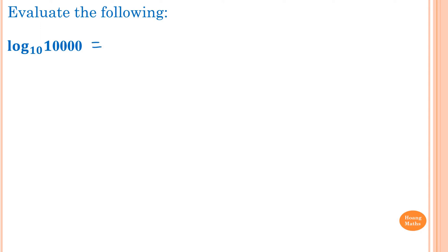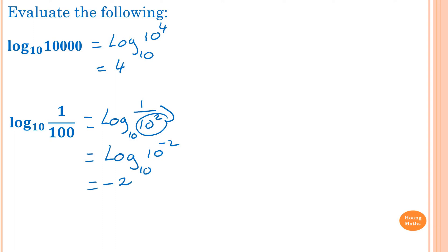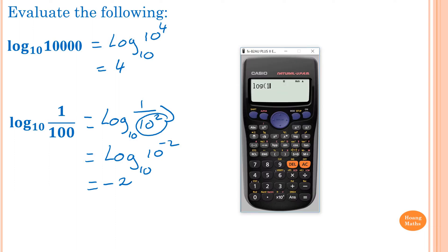First example: log base 10 of 10,000. This is the same as log base 10 of 10 to the power 4, and that gives 4. Now log base 10 of 1 over 100: since 100 is 10 squared, I bring it up to become a negative index, so this is log base 10 of 10 to the power of negative 2, and the answer is negative 2. Let's check: log(1/100) equals negative 2.